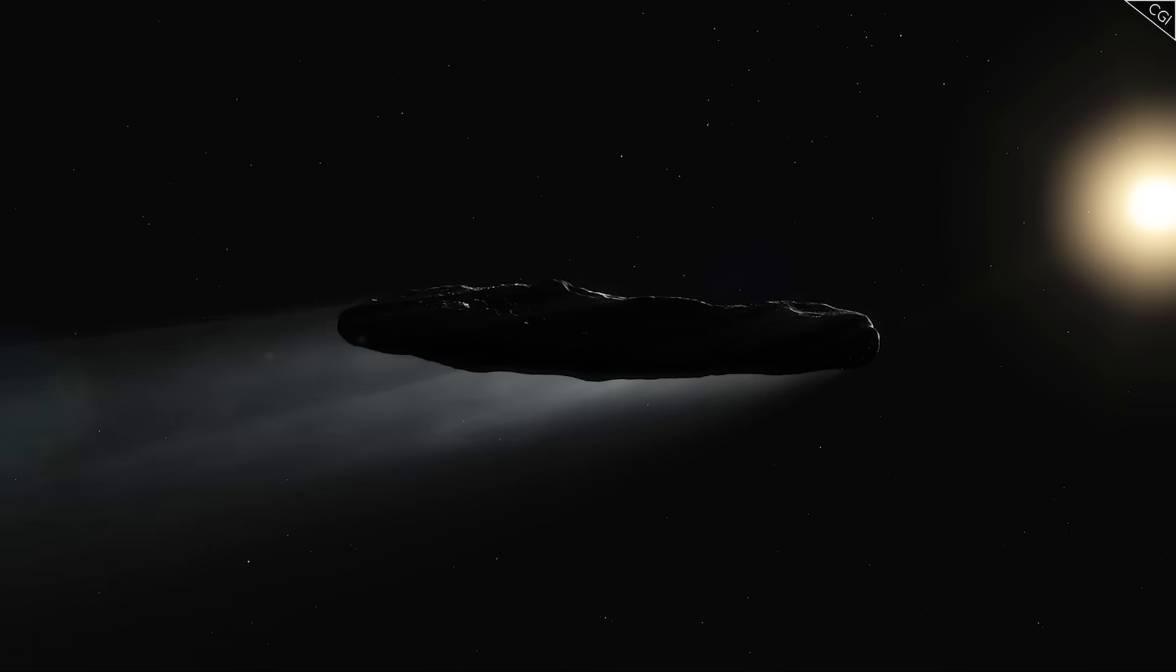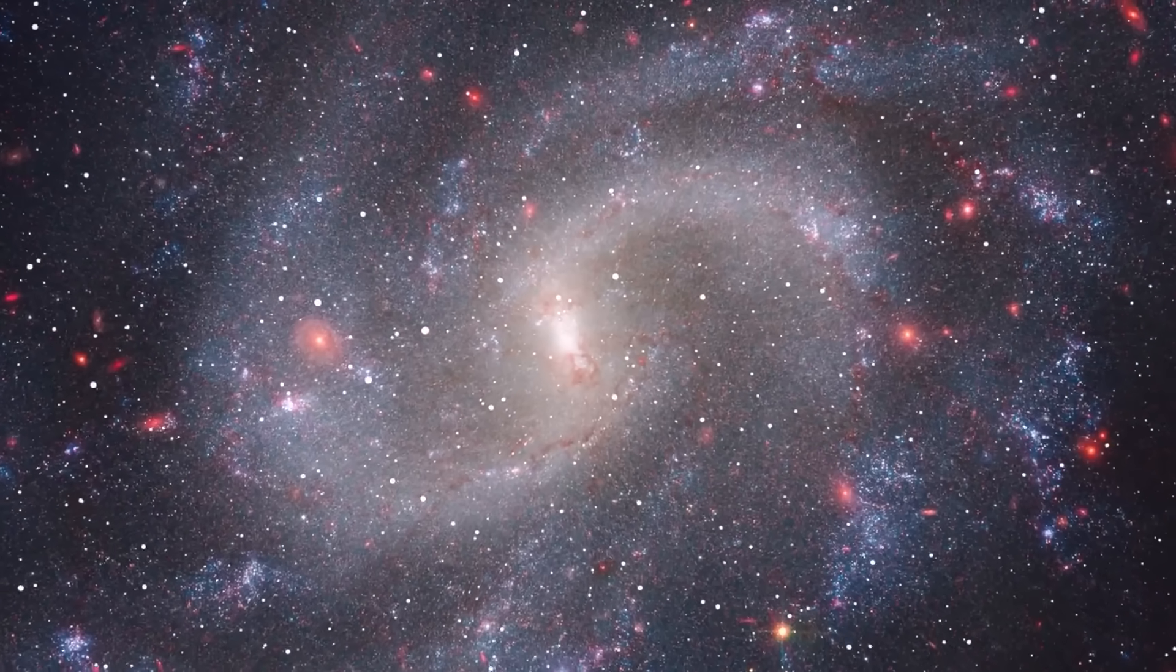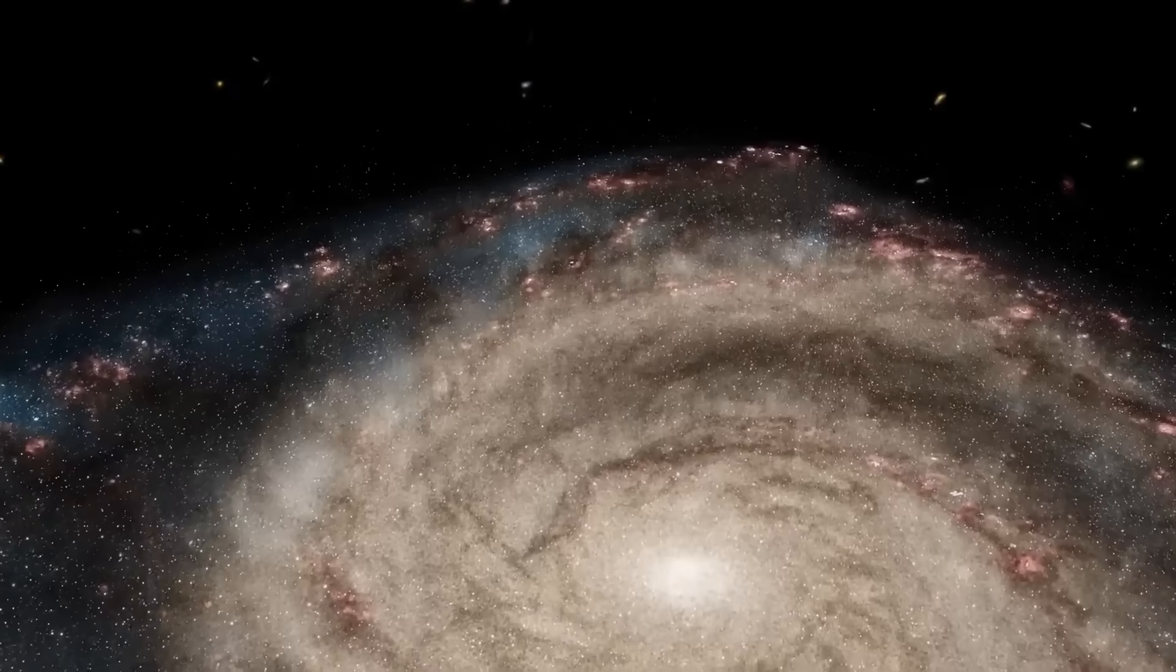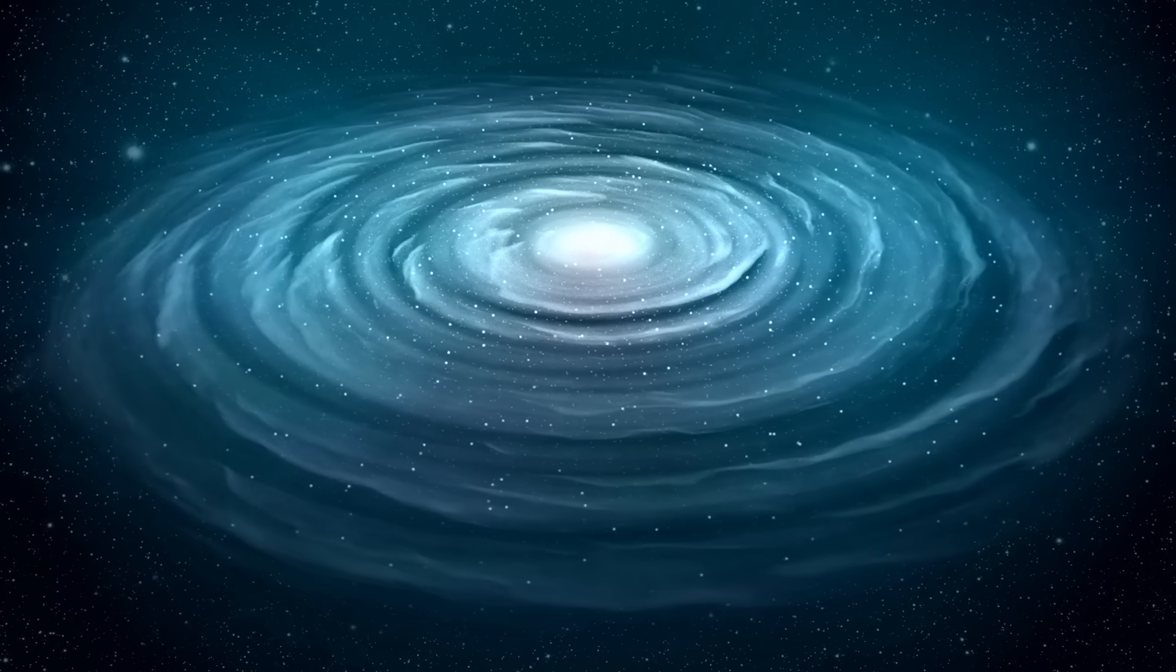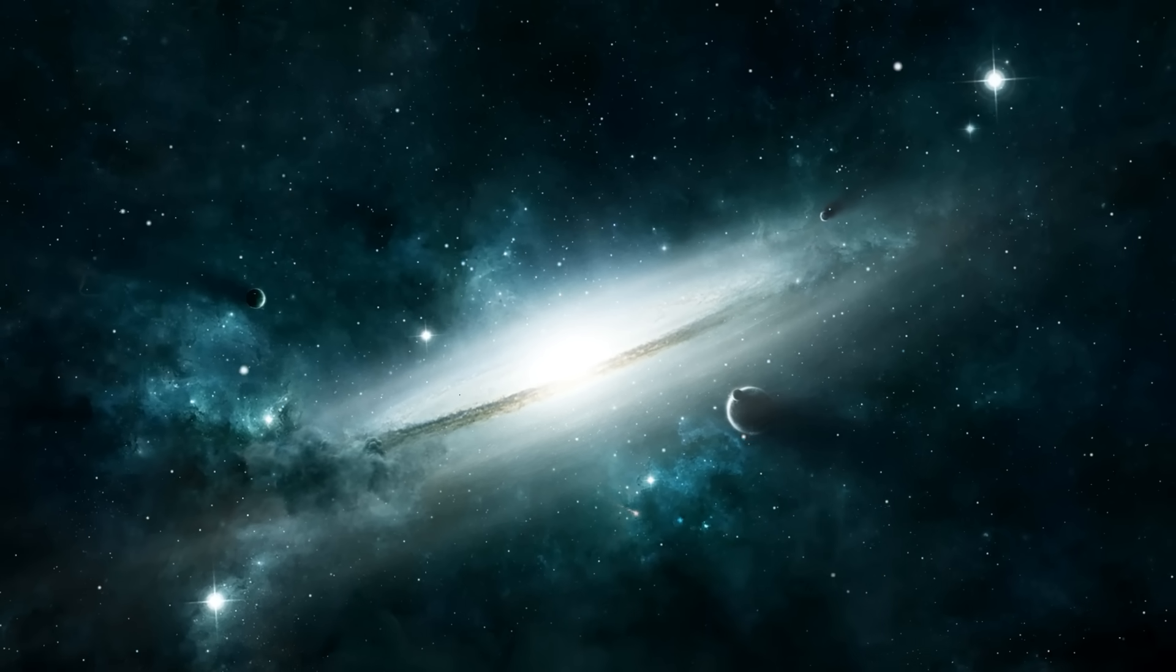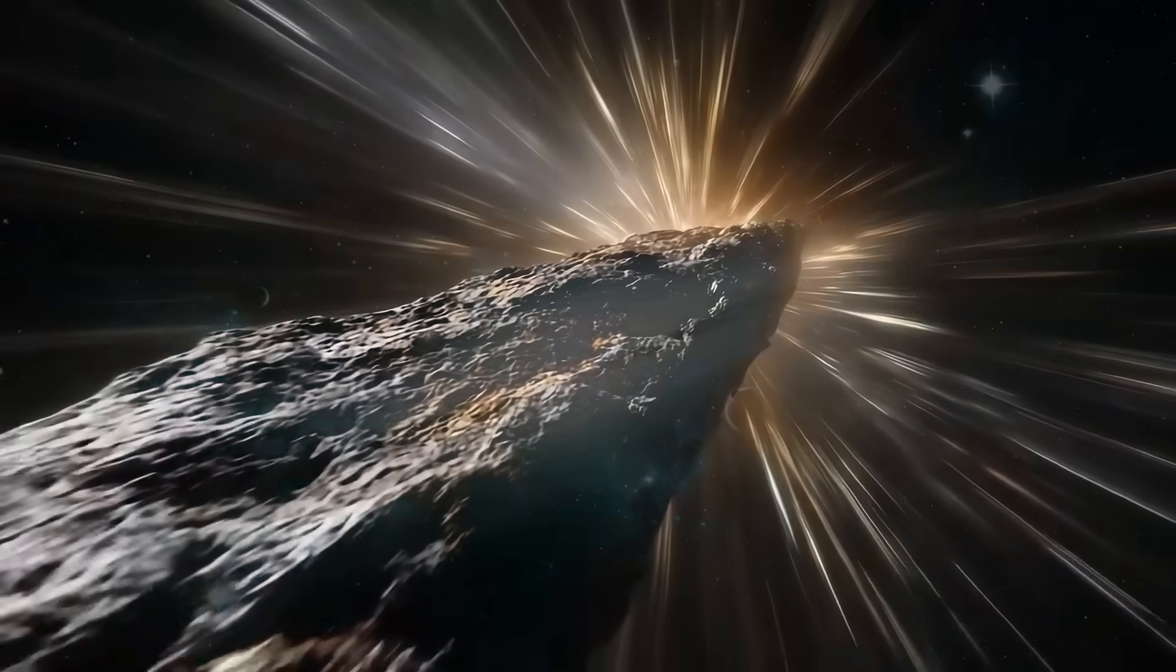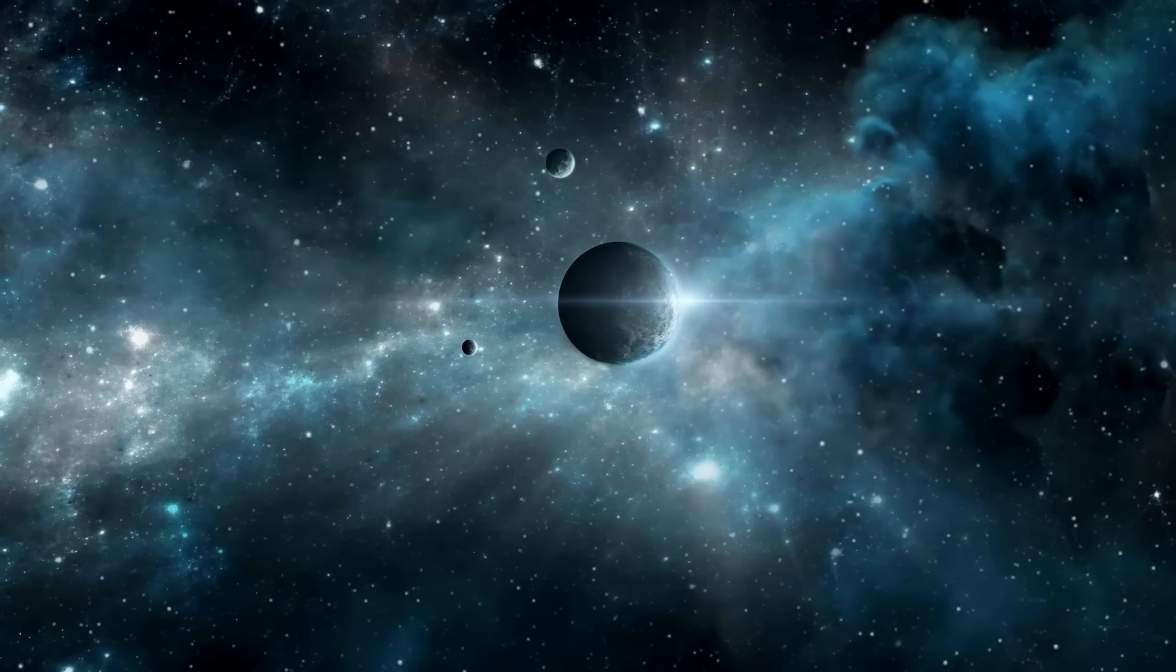Because maybe the object wasn't just maneuvering through space. Maybe it was mapping it, studying our gravity, our orbit, our resonance. Maybe it wasn't fleeing from something at all. Maybe it was waiting for alignment. Now, every 247 seconds, a faint pulse still echoes across the solar system, so weak it blends with the cosmic background. But strong enough to remind us that the story isn't over. The world may have forgotten about 3I Atlas, but the universe hasn't.